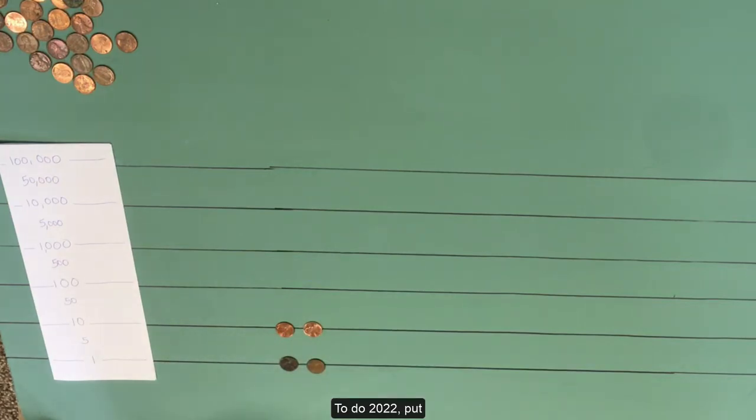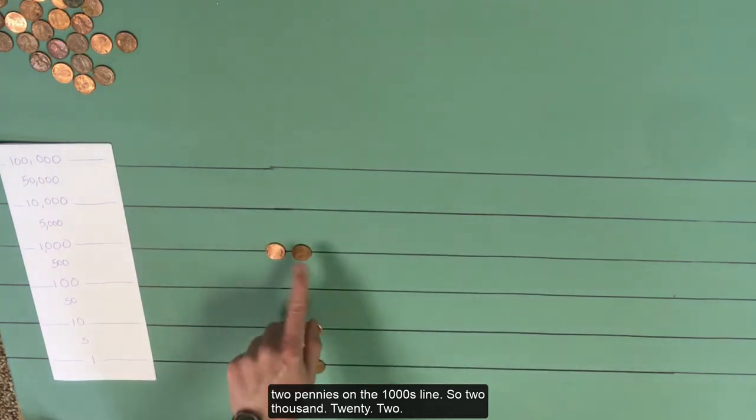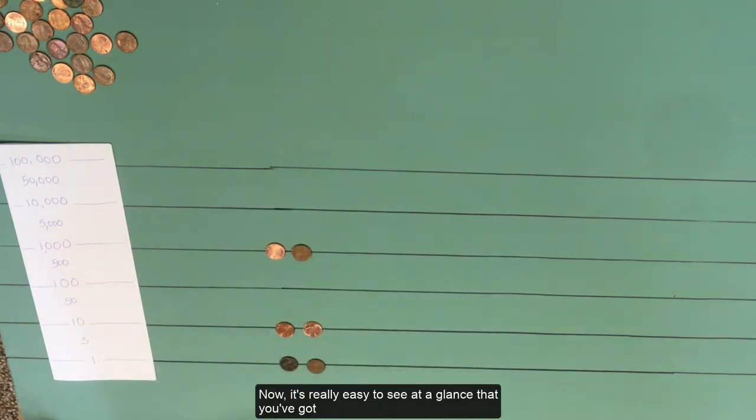To do 2022, put 2 pennies on the 1,000 line, so 2,022. Now it's really easy to see at a glance that you've got 2 pennies on each line. But let's imagine that we had a slightly bigger number.